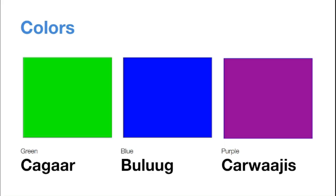Next we have green, which is Agar. Agar. Blue is Bulug. Bulug. And then we have purple, which is Arwajis. Arwajis.